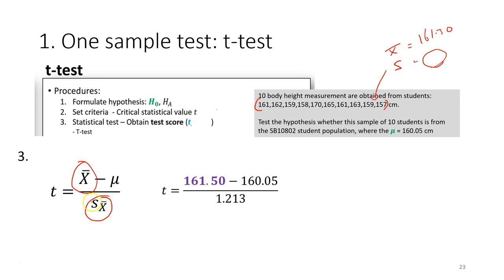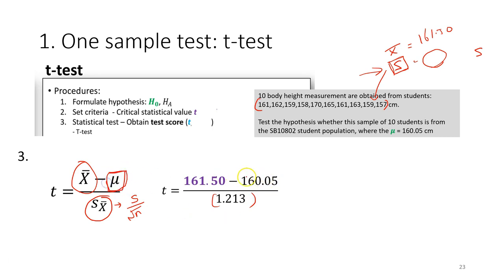After getting the mean, you also need the standard error, not the standard deviation directly. Remember that calculating the standard deviation for a sample is different from the population — refer back to earlier lectures if needed. The standard error is calculated by dividing the sample standard deviation by the square root of n. For the hypothesis test, plug in the population mean value from the question, which is 160.05, then solve the t-test formula: subtract the population mean from the sample mean and divide by the standard error.